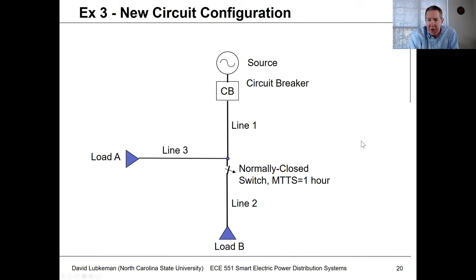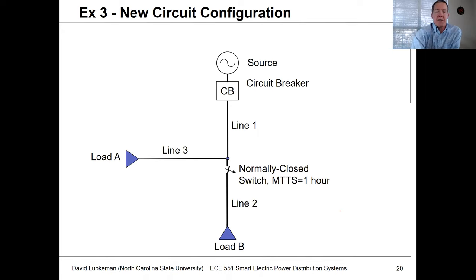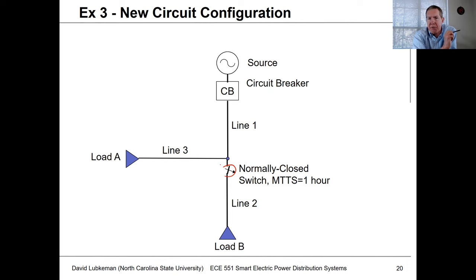This is a new circuit configuration, so we're moving away from the previous setup and setting up a new base case. What I've got is a circuit with three line segments, and now I've put a sectionalizing switch at a particular point. This switch is going to be normally closed, and we're going to assume it's manually operated — it will take one hour for a crew to get out there once instructed and actually operate that switch.